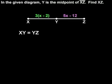Since the length of segment XY is 3 times parentheses x minus 2 and the length of segment YZ is 5x minus 12, then we can set up the equation 3 times x minus 2 equals 5x minus 12.